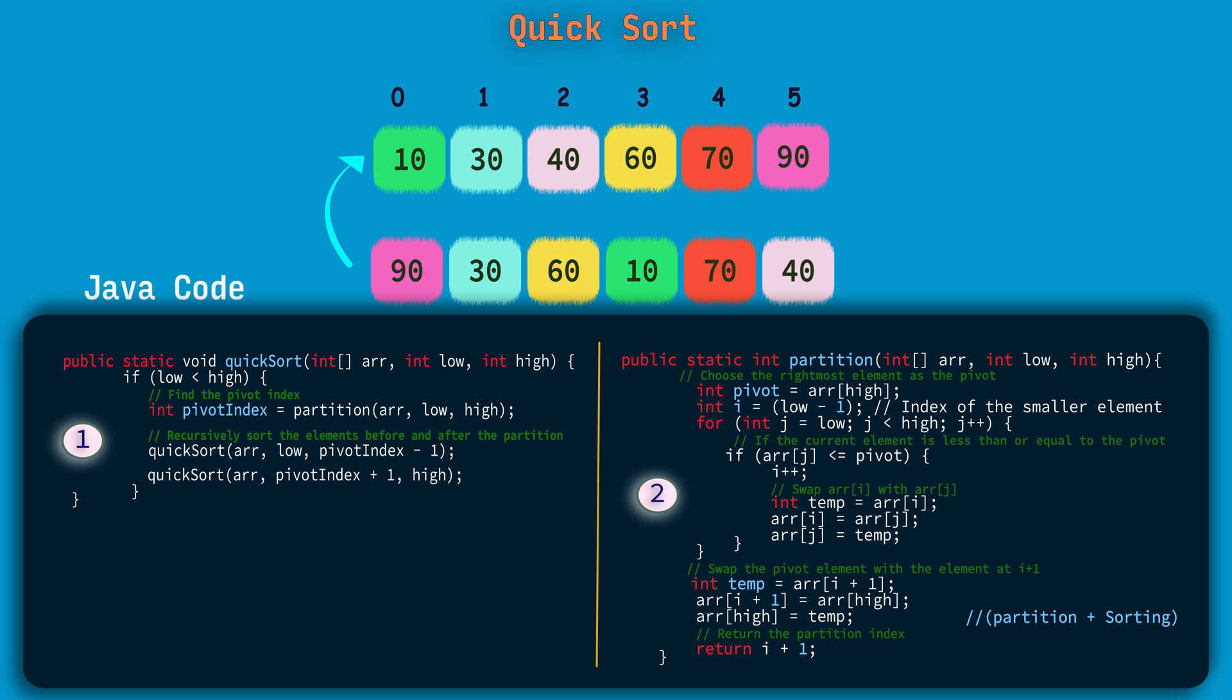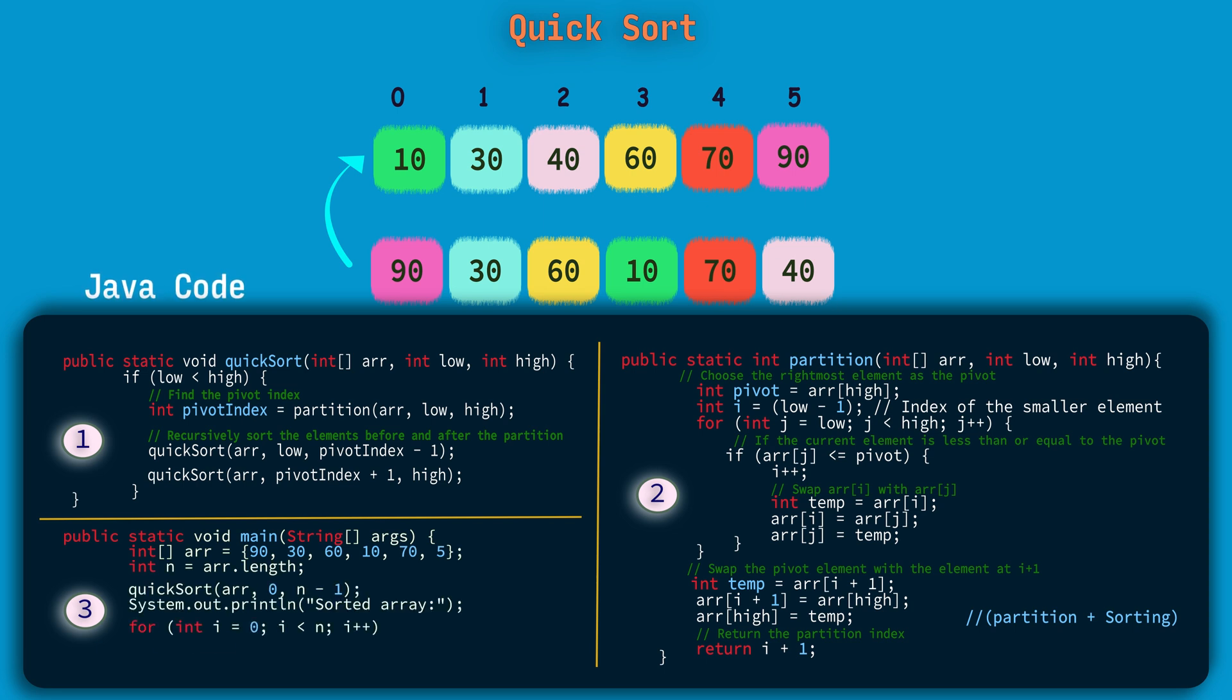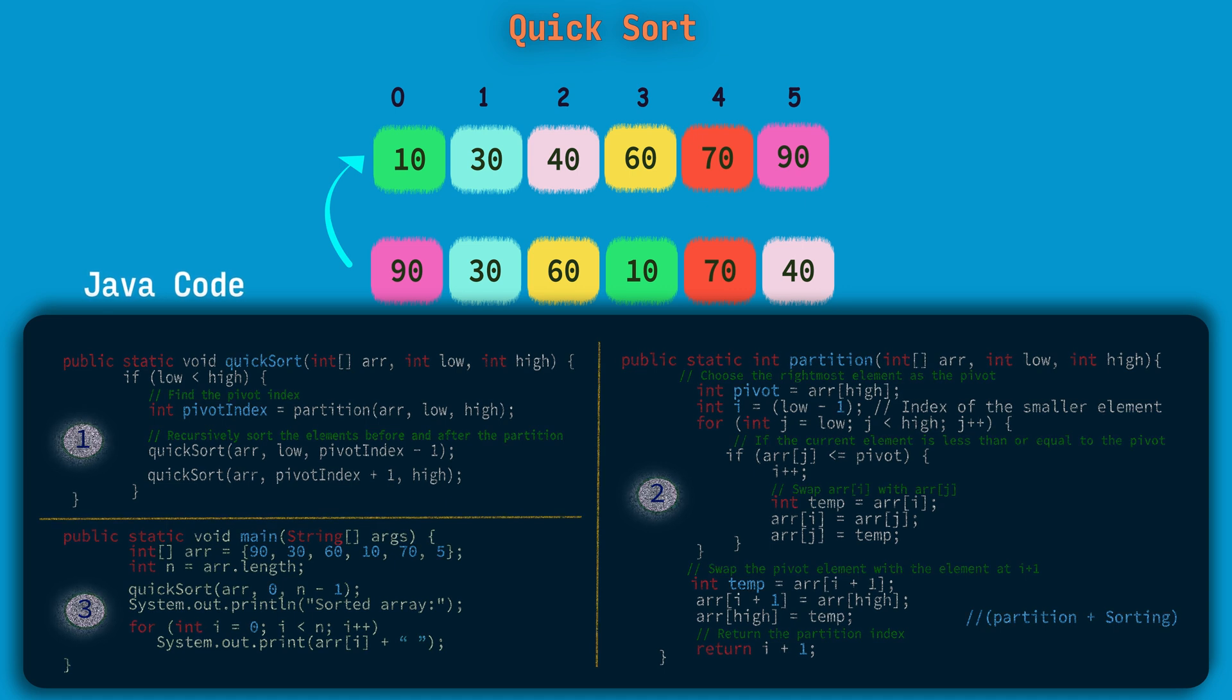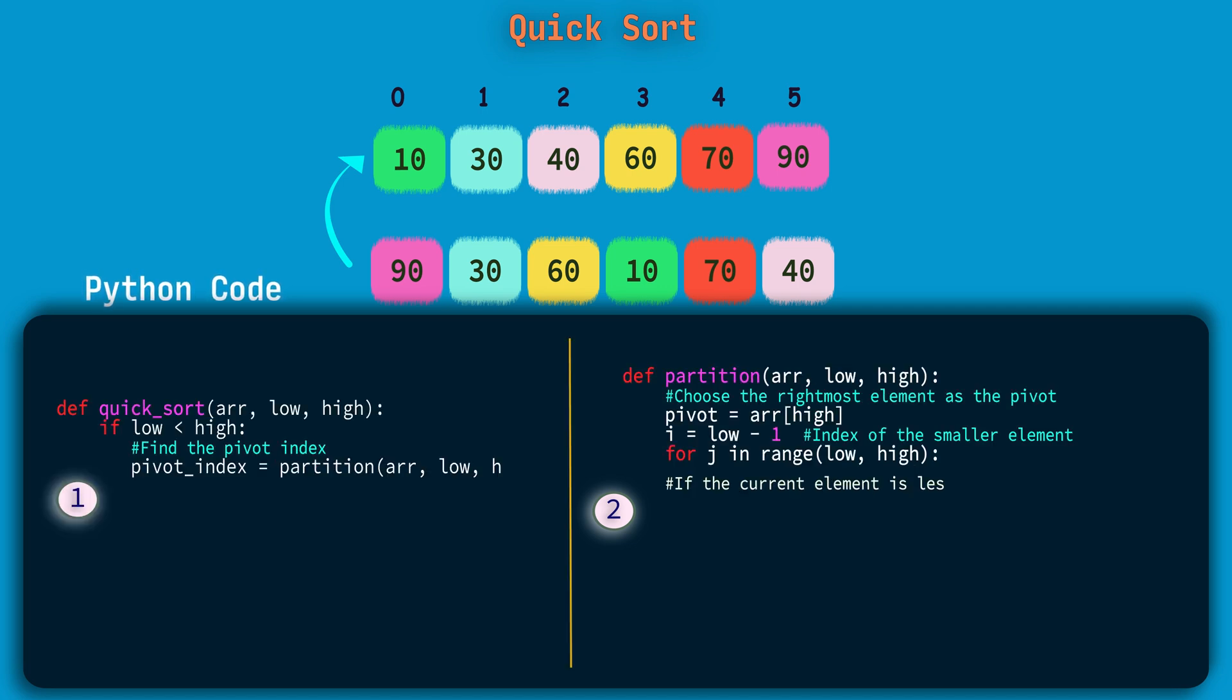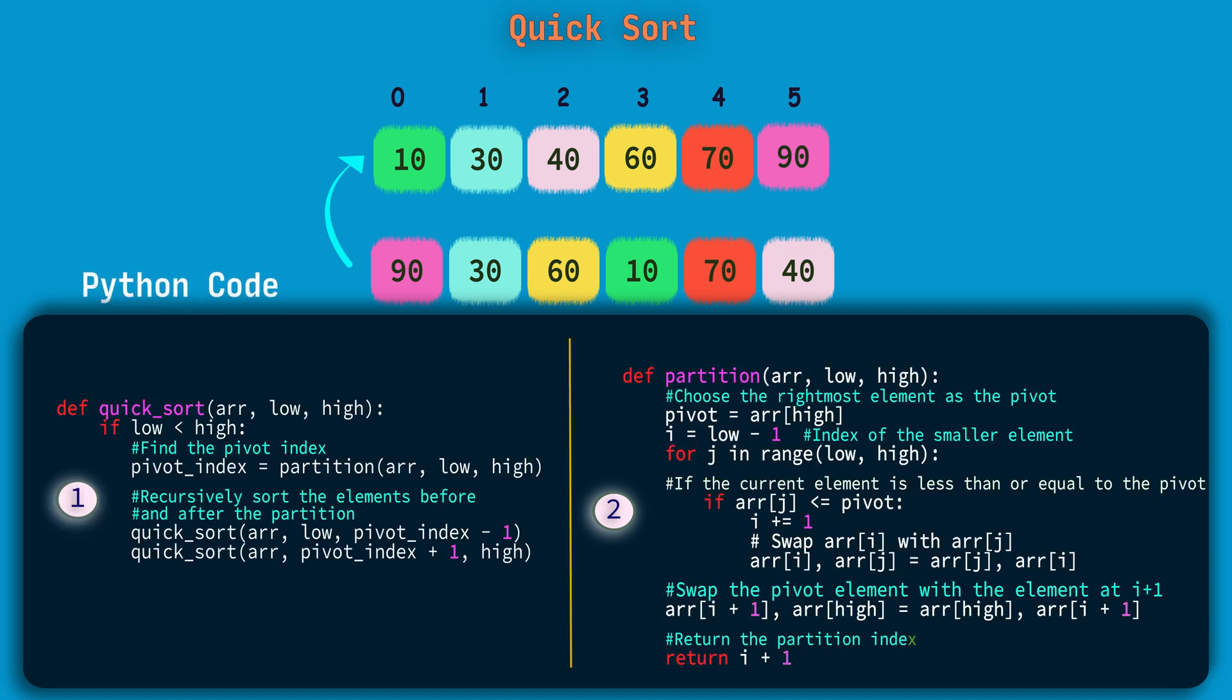So that's pretty simple. Now let's write the driver code for this, that is the main method. Inside main method I am taking one unsorted array, then calling QuickSort method on it by passing the array first index and the last index. And here we go with the Python code for the same: step one, QuickSort method; step two, the partition method. I will mention the GitHub link for the same code for Java and Python in the description.